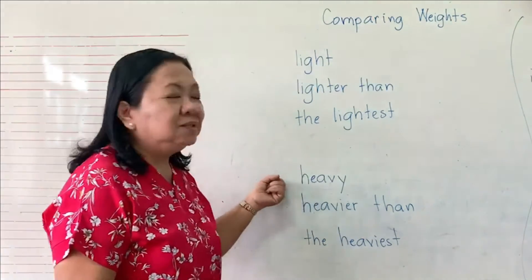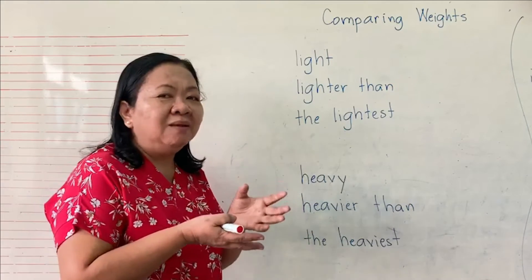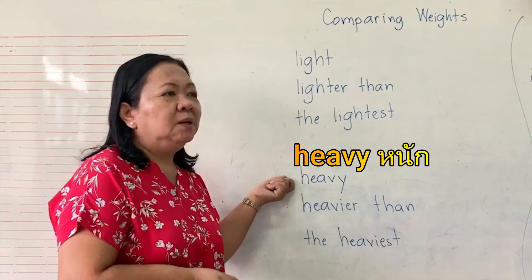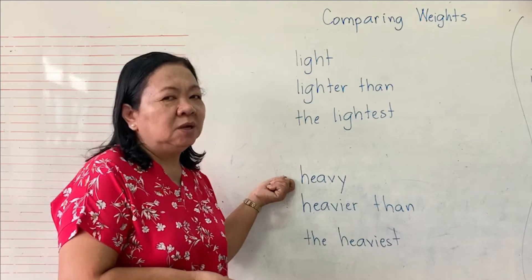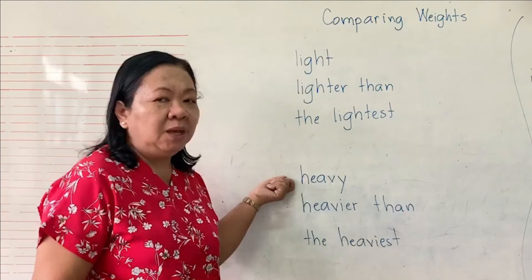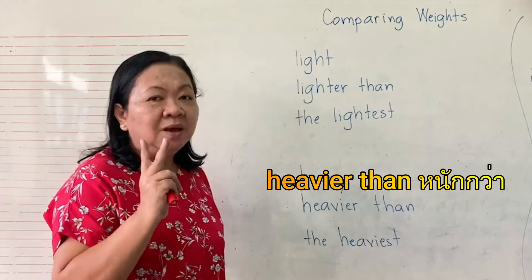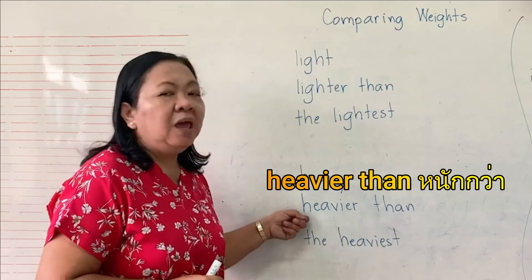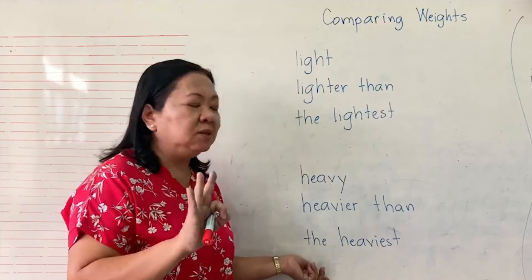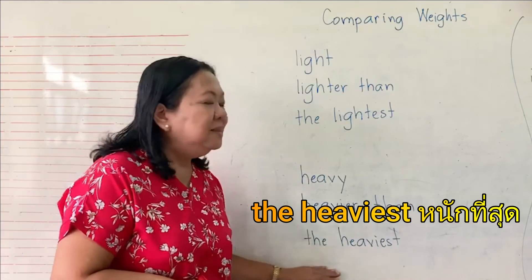When we talk about heavy objects — the ones which are bigger and heavier — we use 'heavy.' For example, five kilograms of fish is already heavy; we are talking about one item. When comparing two heavy things, we use 'heavier than.' And if we are comparing three or more things, we use 'the heaviest.'